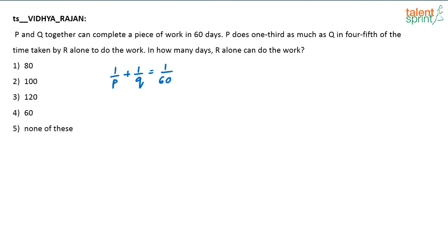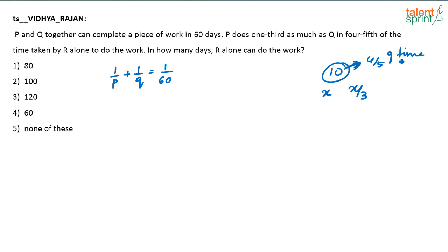What we have to remember here is that they are talking about a fixed time. Let it be 10 days — I am just assuming. In this 10-day time, P will do 1/3 as much as Q does. So if I say in this 10 days Q does x units of work, how much work will P do? P will do x/3 units. P does 1/3 as much as Q in 4/5 of the time taken by R. This 10 days refers to 4/5 of the time R takes to finish the work. So if I say that R takes 10 days to do 4/5 of the work, in this 10 days P will do 1/3 of what Q has done. If Q does x units of work in this 10 days, P would have done x/3 units of work in this 10 days.